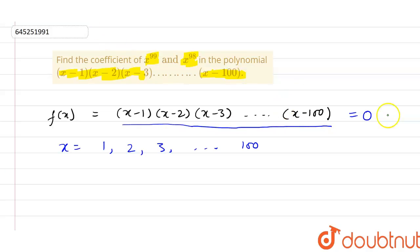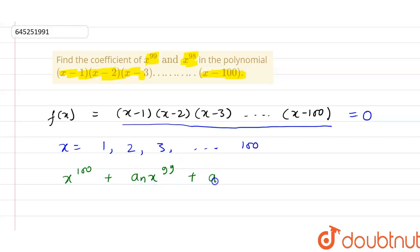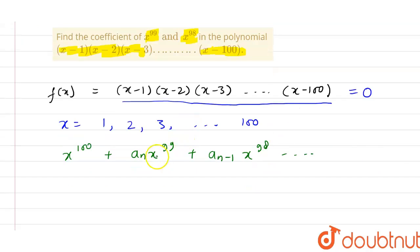So this is in the form of x raised to power 100 plus a_n times x raised to power 99 plus a_(n-1) times x raised to power 98 and so on. Here we have to find the coefficient of x raised to power 99 and x raised to power 98, meaning we have to find the values of a_n and a_(n-1).